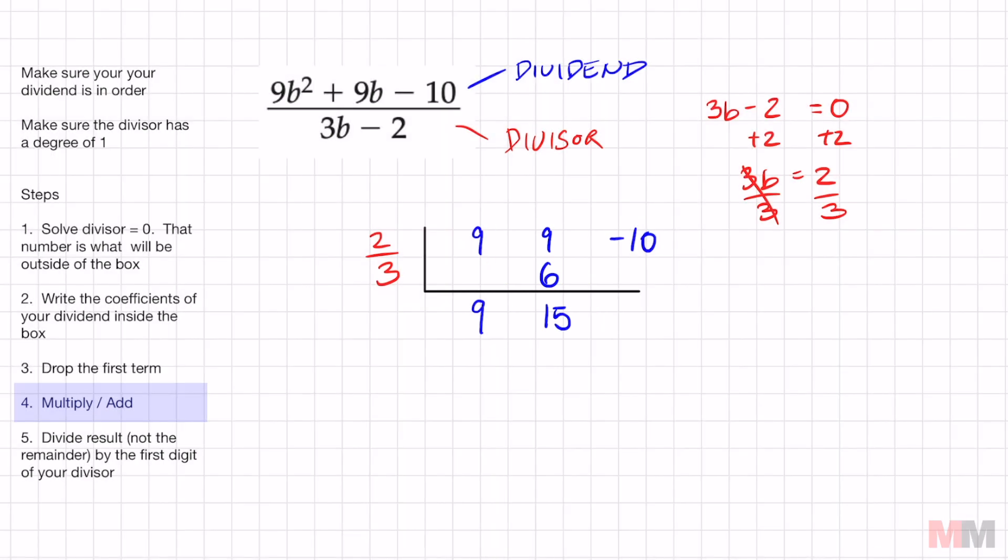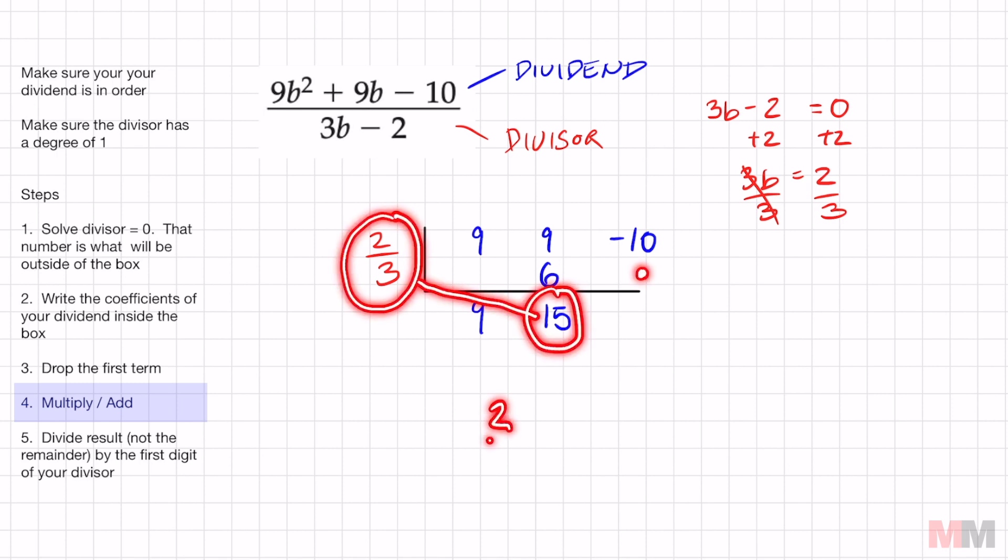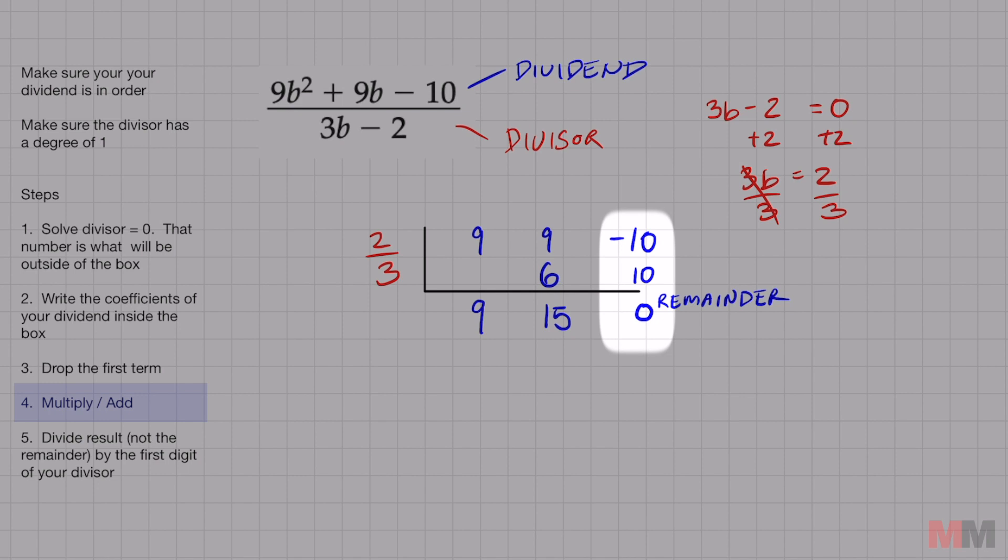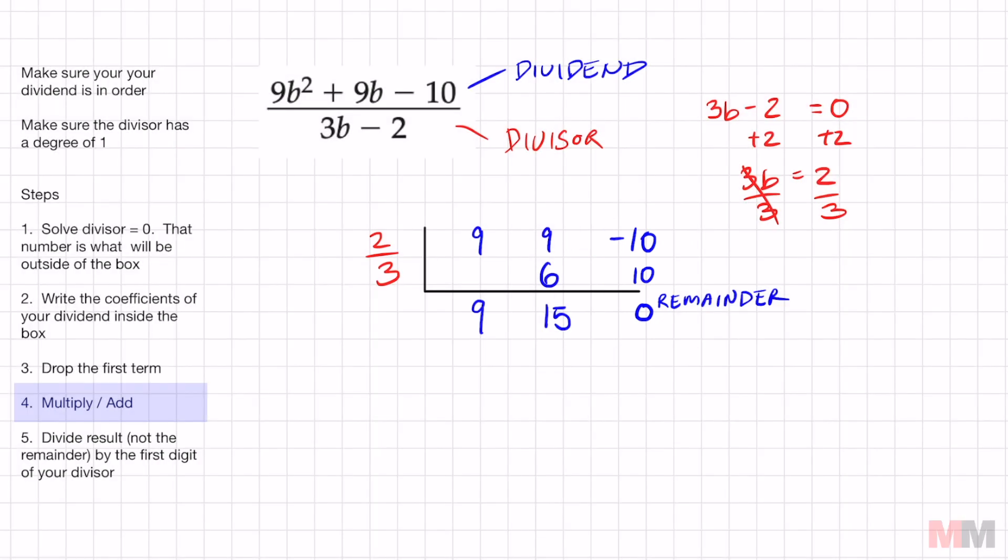Next step is to add. We're going to add 9 plus 6 to get 15. And then we just repeat that same thing. I'm going to take two-thirds, multiply it to 15, and write the result right here. Two-thirds times 15 is 30 over 3, which equals 10. I'm going to put that right here. And this last slot is going to be zero, which is going to represent my remainder. When you get a remainder of zero, it's pretty sweet. It just means that this is a factor of this polynomial right here.